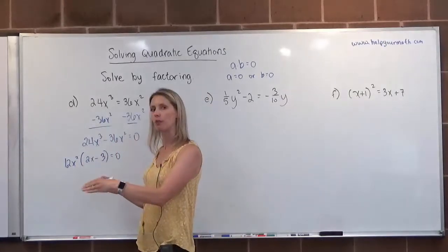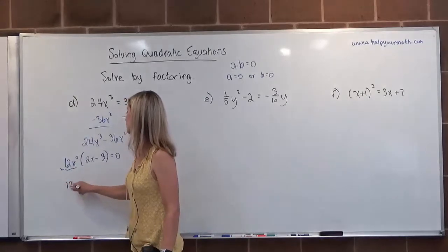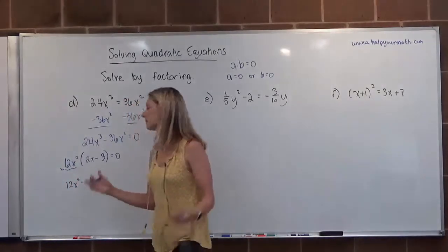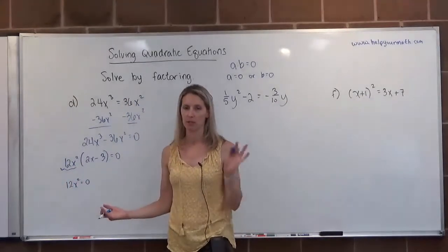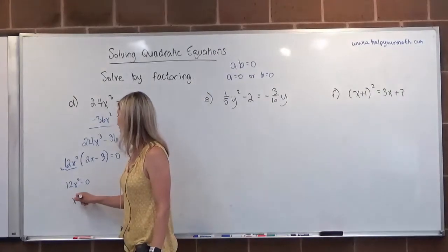You can also just lump it together with the x squared. Or you can say I'm going to set this equal to zero, and then you have to divide both sides by 12. And guess what happens to 12? Bye bye.